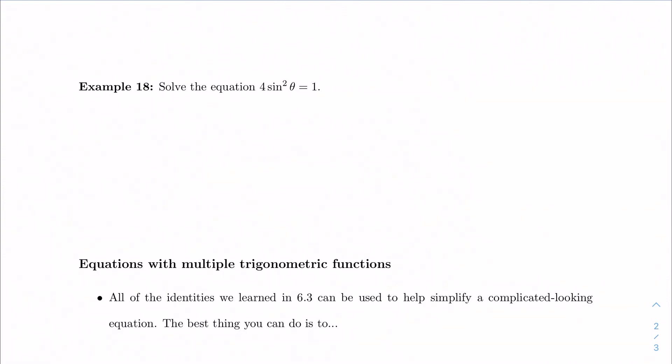For this example, if I have 4 sine squared theta equals 1, there's no restriction here. Which means I need to use my general solution. And the process is the same, exactly the same. We just have one extra piece at the end. So my equation solving strategies are still applicable here. I'm going to start by dividing by 4. I'm going to take the square root of both sides. So I get plus or minus 1 half. So I have two solutions I need to consider. When sine theta equals 1 half, and when sine theta equals negative 1 half.